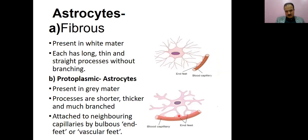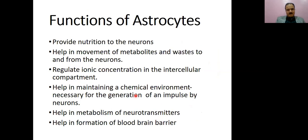The vascular feet help in the formation of the blood-brain barrier, which we will discuss further. Functions of astrocytes include: providing nutrition to neurons, helping movement of metabolites and gases to and from neurons, regulating ion concentration in the intercellular compartment, helping maintain the chemical environment necessary for generation of nerve impulses by neurons, helping metabolize neurotransmitters, and helping in the formation of the blood-brain barrier.